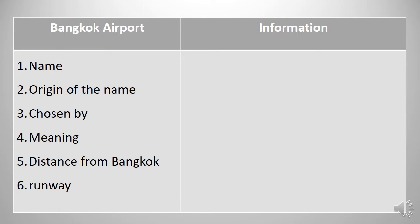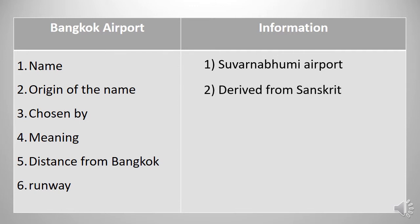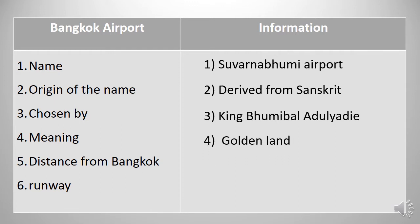First, the name of Bangkok airport is Suvarnabhumi Airport. Number two, origin of the name — it's derived from Sanskrit. Number three, chosen by — it's King Bhumibol Adulyadej. Number four, the meaning — Suvarnabhumi means golden land. And number five, distance from Bangkok — it's 30 kilometers.